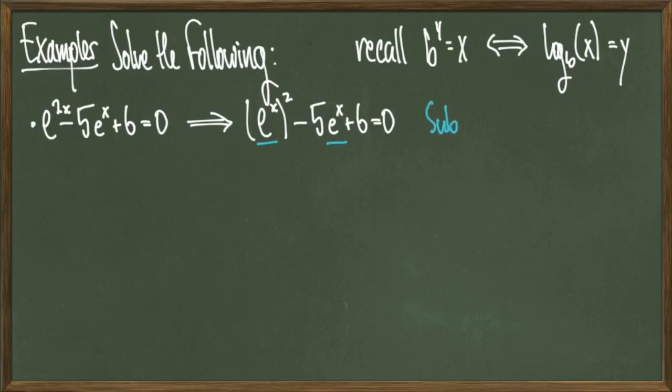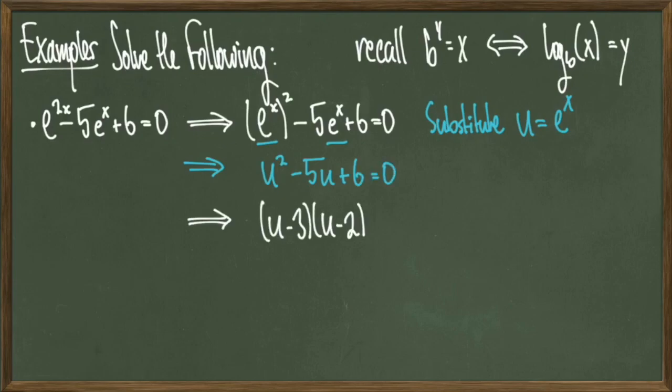Now to make this more manageable, we'll make the substitution u equals e to the x. Rewriting our equation with the substitution, we get u squared minus 5u plus 6 is equal to 0. And then we can solve this like a quadratic and get a solution set of u equals 3 and u equals 2.